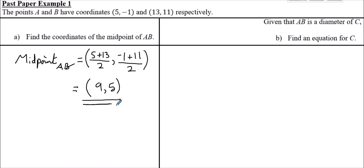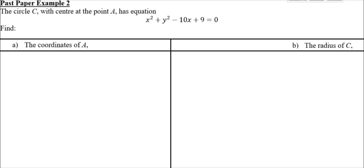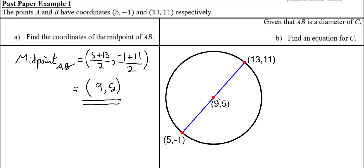For part b, we're told that AB is a diameter of circle C and need to find an equation for C. It's a good idea to draw a diagram — the center is at (9, 5) from part a, with A and B at either end of the diameter. The center is a vital part of finding the equation of the circle; we also need the radius.